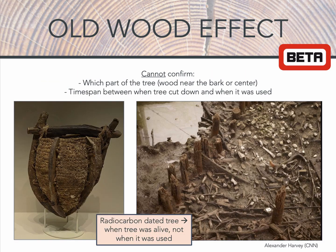But why does this matter? In archaeology, when you're dating a piece of wood from a building or an artifact, you're usually not able to confirm which part of the tree the wood came from, nor are you able to determine the time span between when the tree was cut down to when it was actually used. As a result, a sample's radiocarbon age can tell us when the specific tree ring or set of rings was alive, but it would not provide any information as to when the wood from the tree was actually used. Due to this old wood issue, artifacts or buildings may date much older than they are in reality.